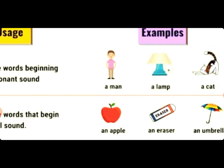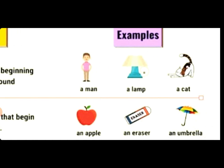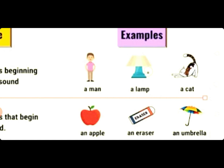For example, 'an apple'. Apple starts with 'A', which is a vowel letter, so we use 'an apple'. Another example: 'an eraser'. Eraser starts with 'E', which is a vowel letter, so we use 'an eraser'. So to summarize: before consonant sounds we use 'a', and before vowel sounds we use 'an'. This is a simple rule — okay, let's practice.